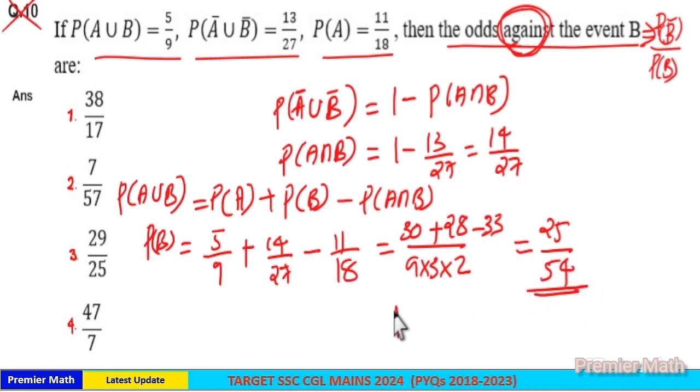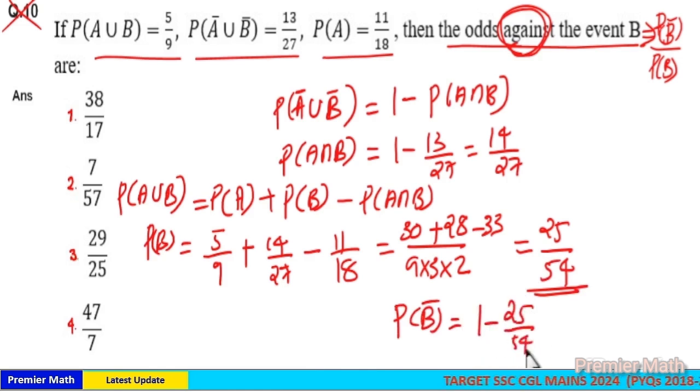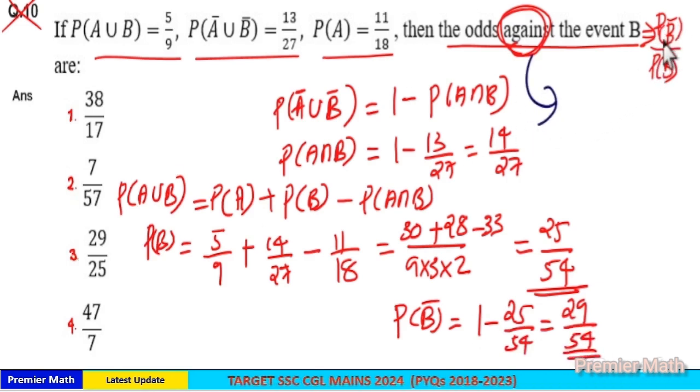Then P(B') is equal to 1 minus 25/54 which is equal to 29/54, which means here odds against B formula is P(B') divided by P(B). So P(B') is 29/54 divided by 25/54 which is equal to 29/25. So option 3 is your answer.